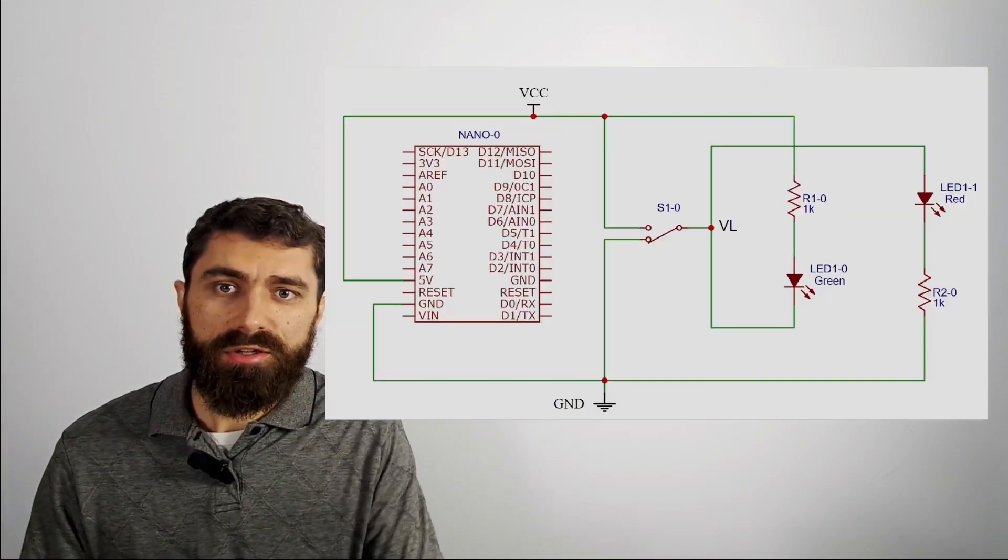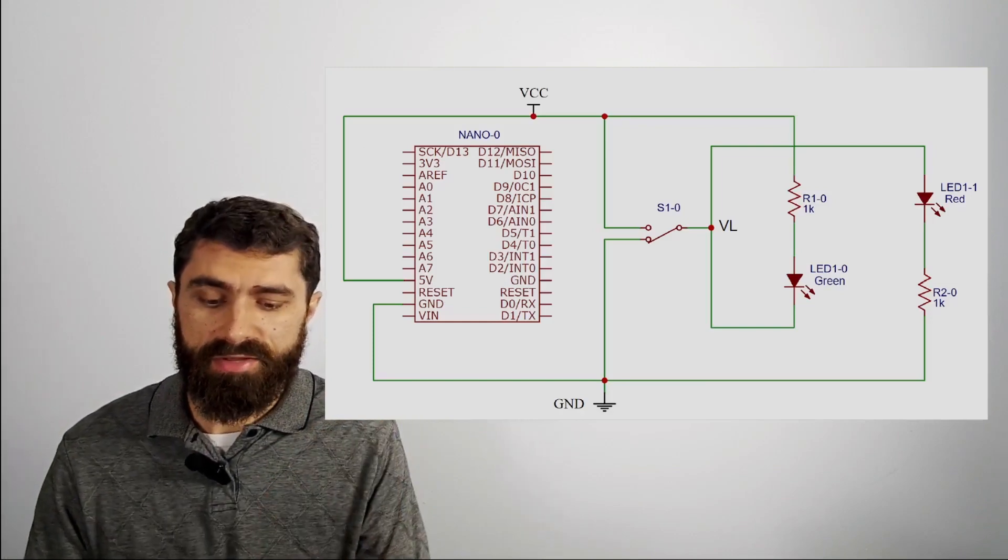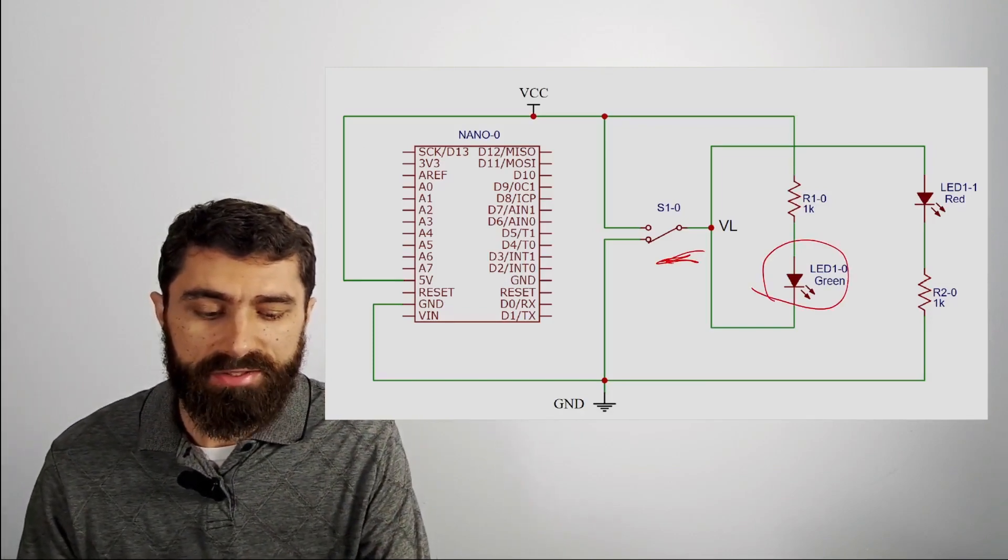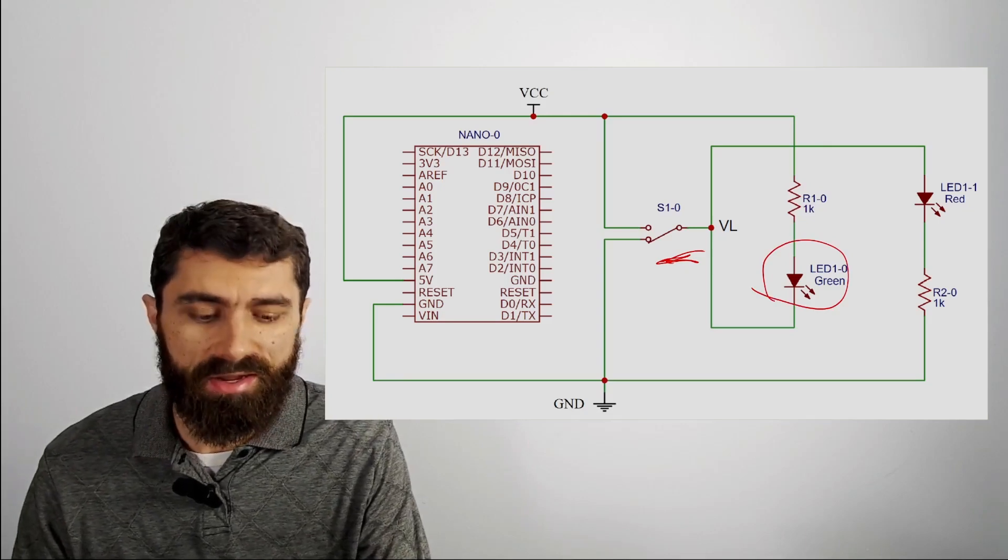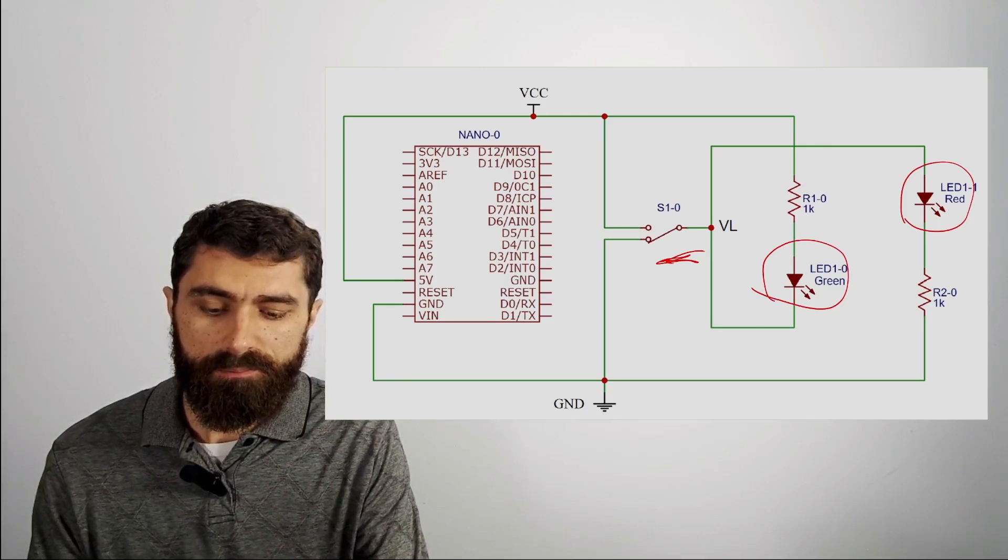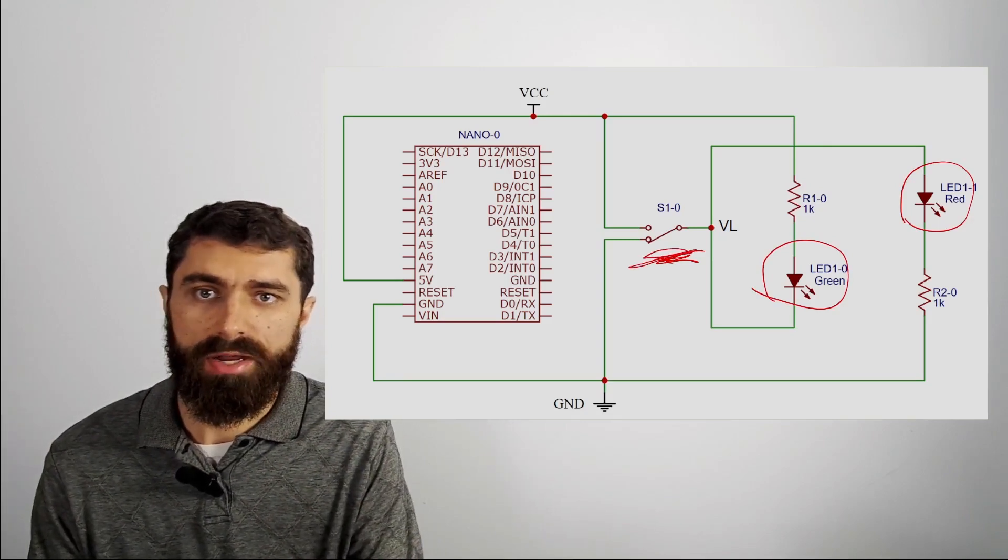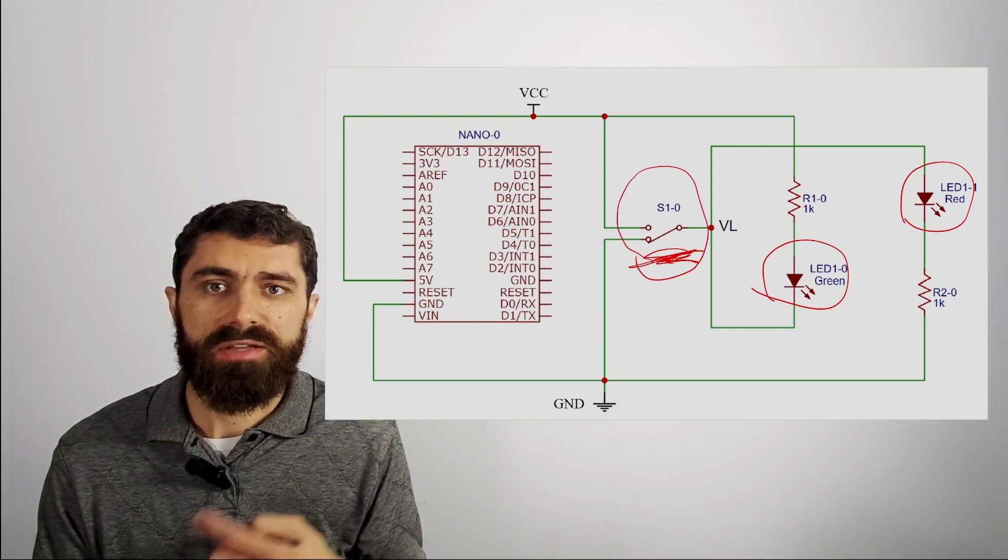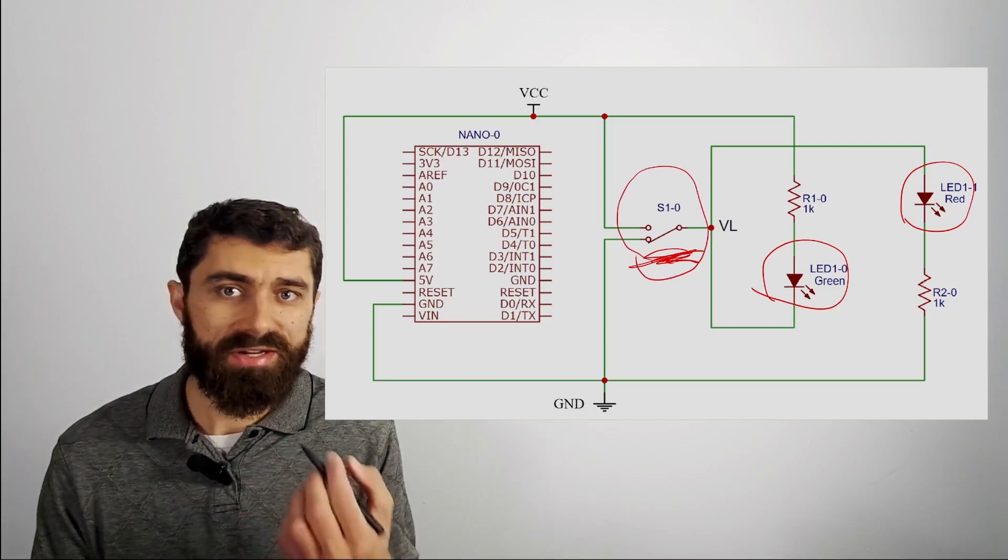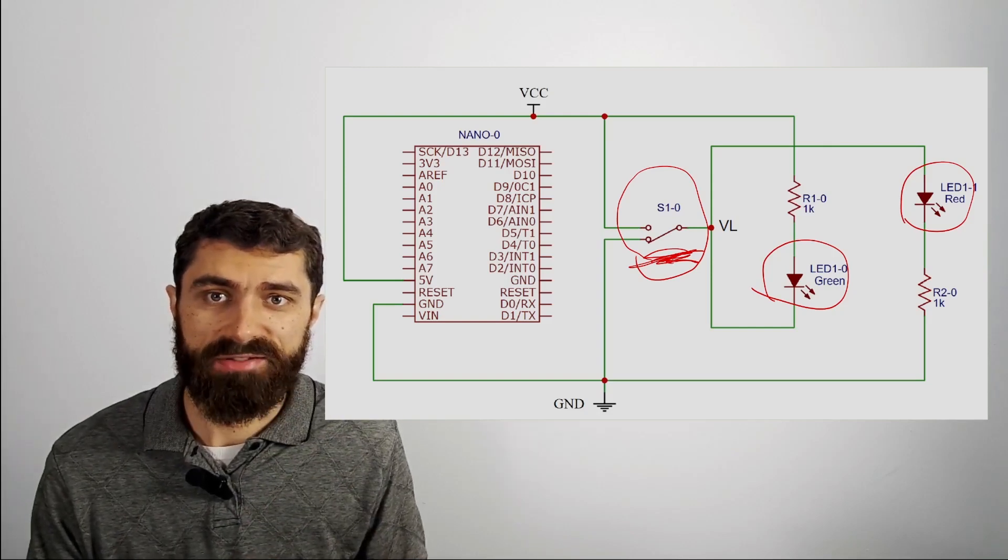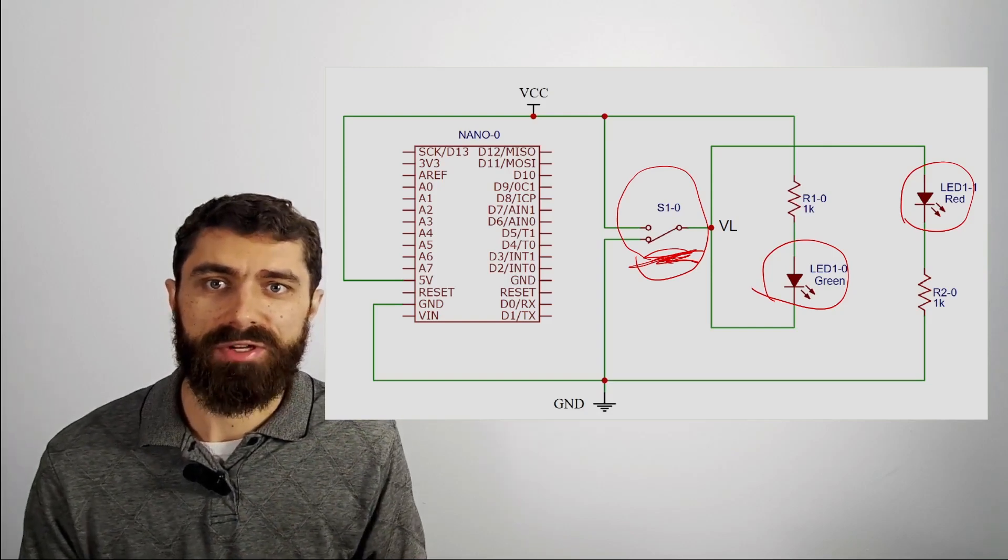So what we're going to do is we're going to actually build this simple circuit here. We have two LEDs, a green LED and a red LED, and we're going to be able to toggle them on and off. So one will be on and one will be off depending on the position of this switch. So it's a simple circuit but it will allow me to illustrate this method for wiring circuit schematics that I think will make things fairly straightforward.